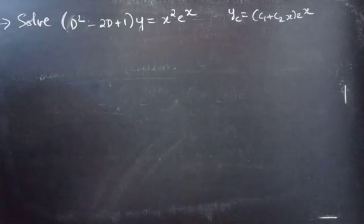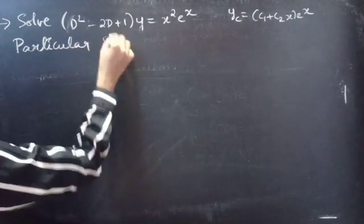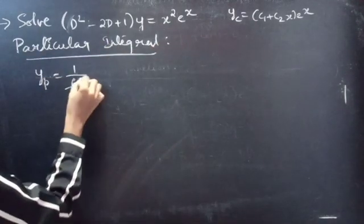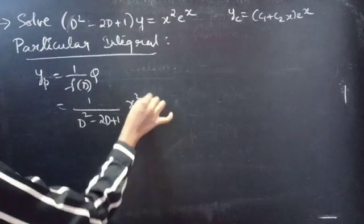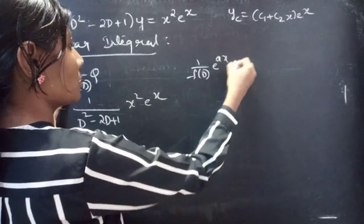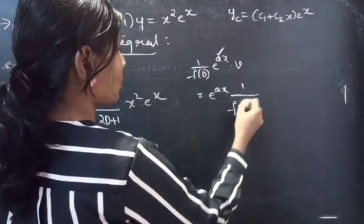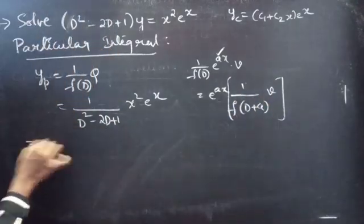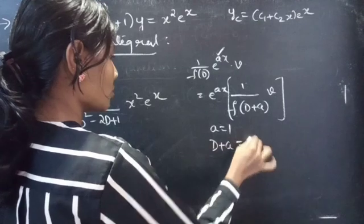Now let us find yp, the particular integral. We can find the particular integral using (1/f(d))·Q. We have f(d) = d² − 2d + 1 and Q = x²eˣ. This is of the form (1/f(d))·eˣ·v. We will shift eˣ towards the left by replacing d with d + a, and then operate v with 1/f(d + a). Comparing eˣ with eˣ, we get a = 1, so d + a = d + 1.